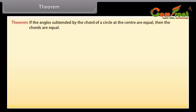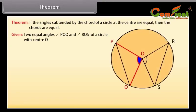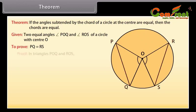Let us prove the converse. Given: two equal angles — angle POQ and angle ROS — of a circle with center O. To prove: PQ is equal to RS.